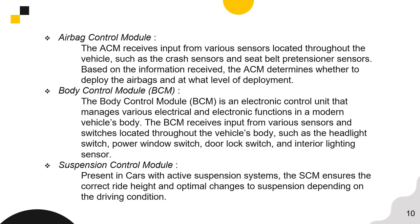The Engine Control Module uses sensors to ensure the correct amount of fuel and ignition timing to get the most power and economy out of the engine. The ABS Control Module ensures that the wheels are not skidding and determines when to trigger braking and release the brake to ensure wheels don't lock up. The Body Control Module manages various electrical and electronic functions in a modern vehicle's body, receiving input from sensors and switches such as the headlight switch, power window switch, door lock switch, and interior lighting sensor.